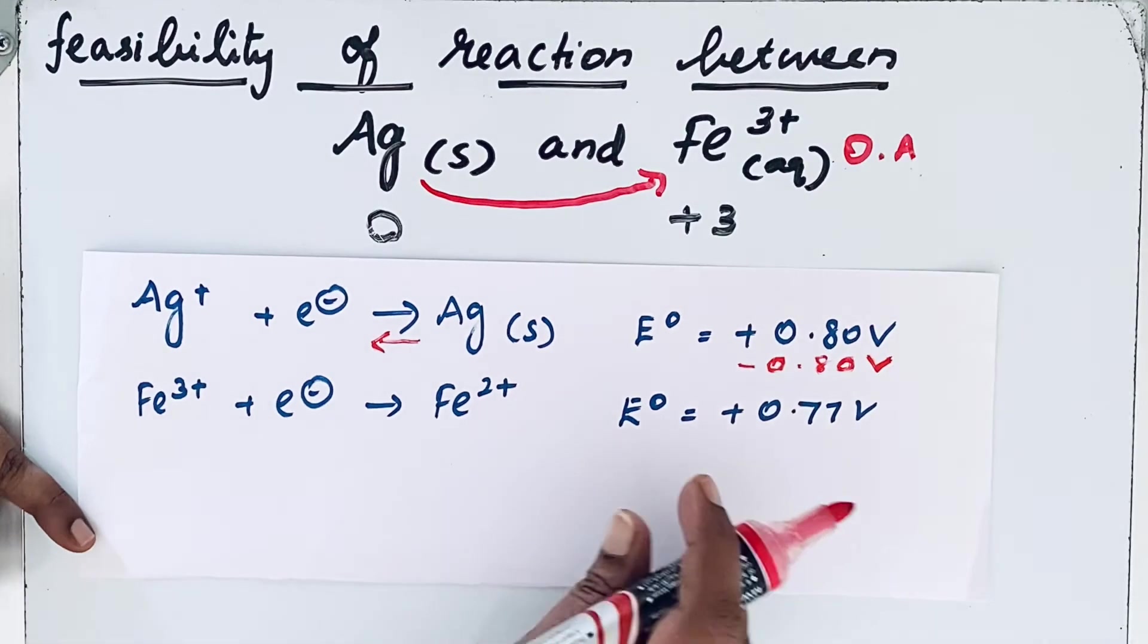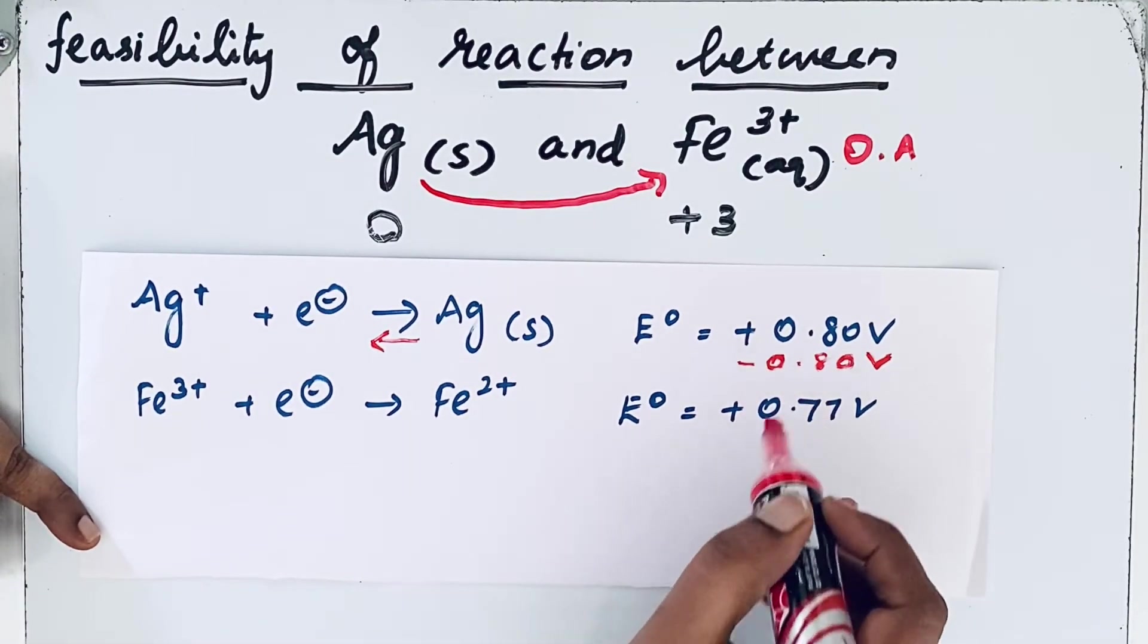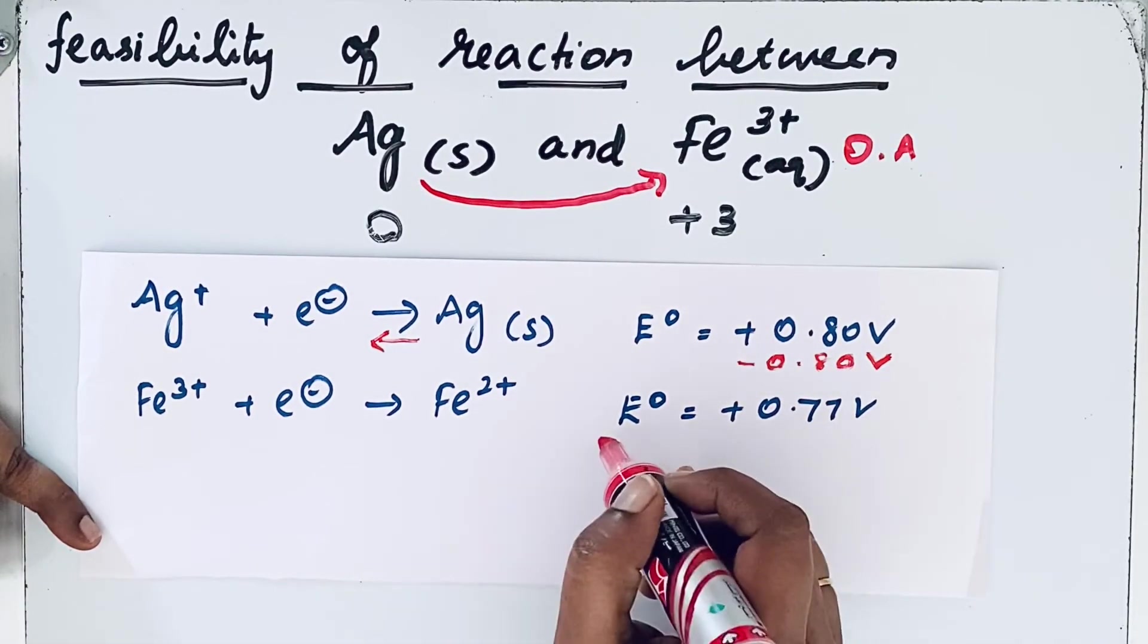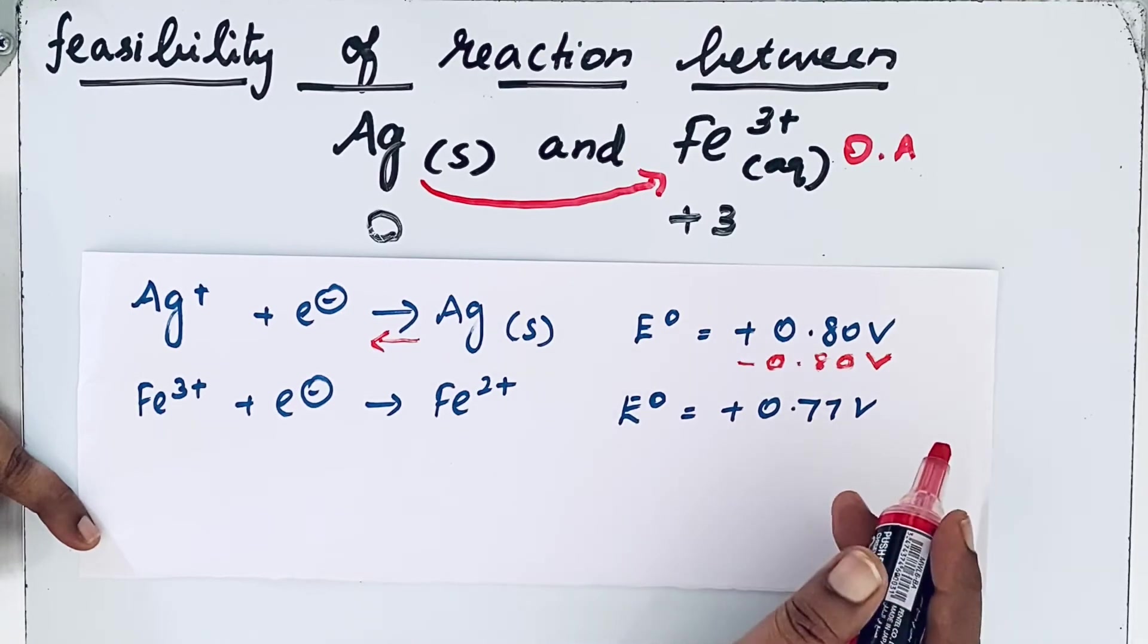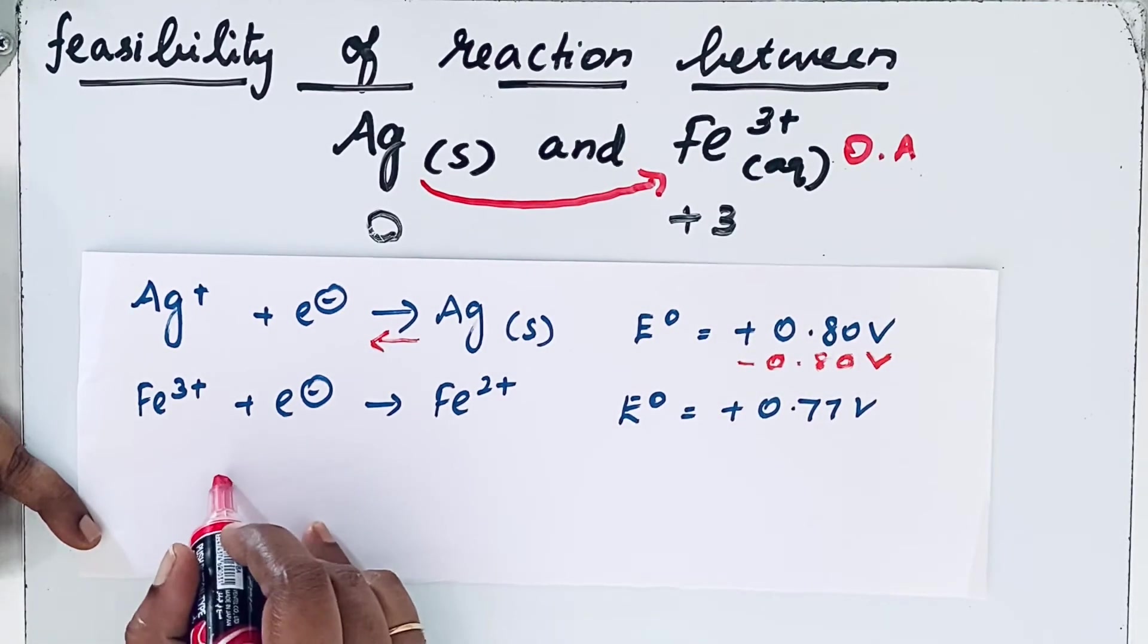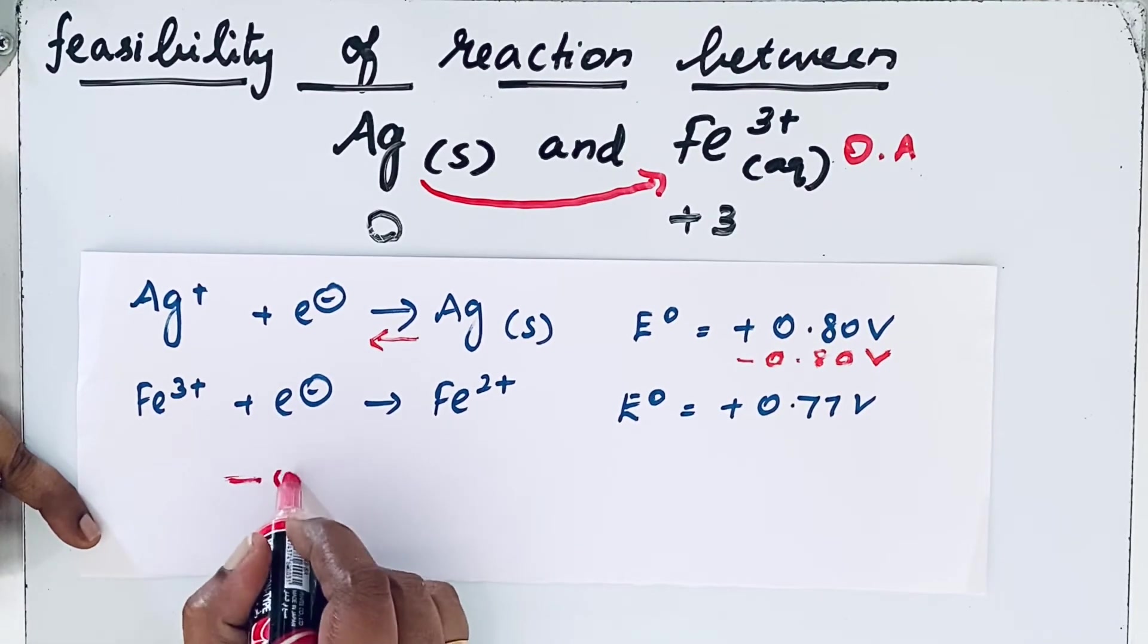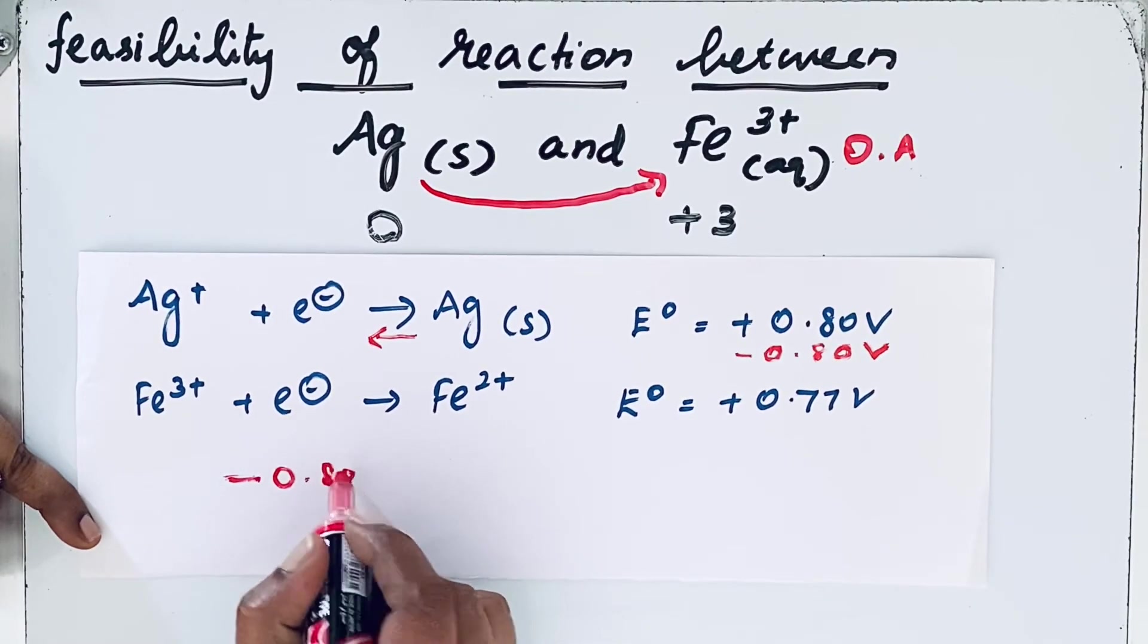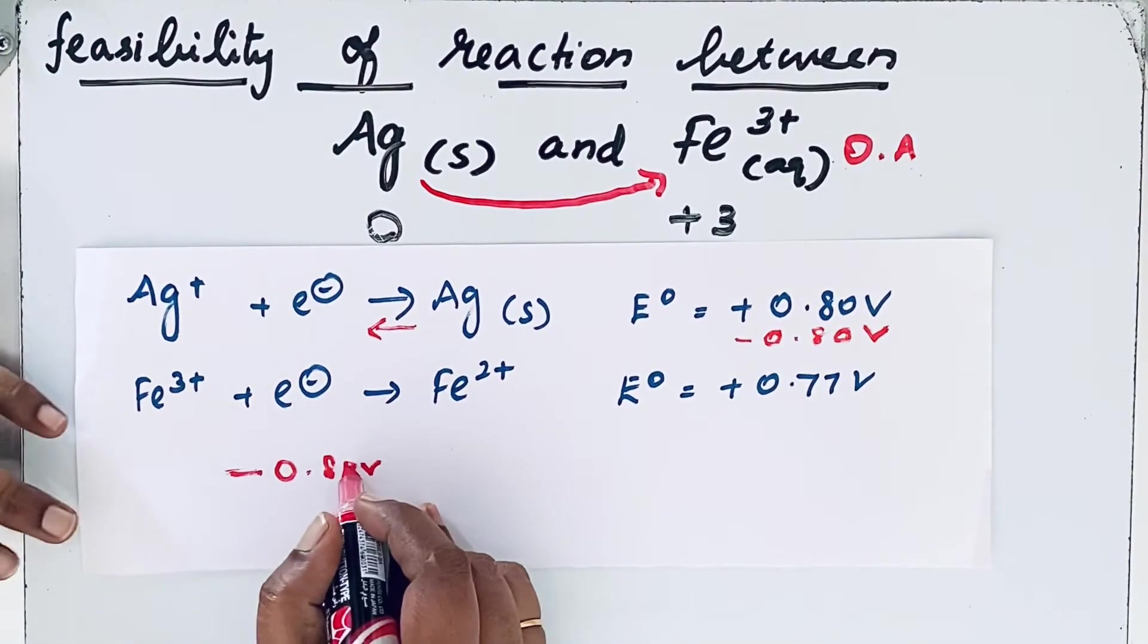So now we are going to compare this value with the electrode potential of Fe³⁺: minus 0.80 volt with plus 0.77 volt.